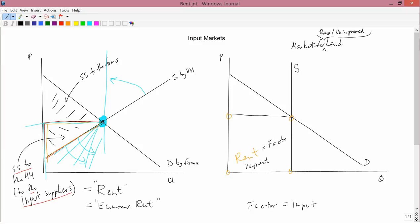And on this right-hand diagram, the payment for land is just the price times the quantity. Well, the price is P star and the quantity is Q star, and price times quantity is that rectangle. So in other words, all of the factor payment, all of the payment for land, is economic rent.